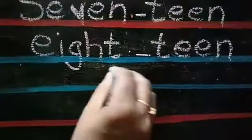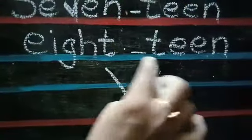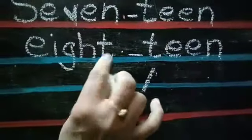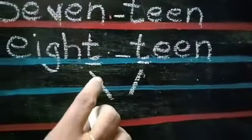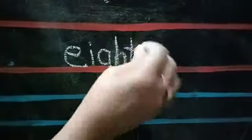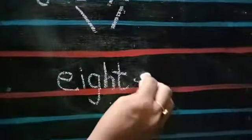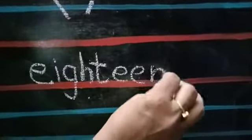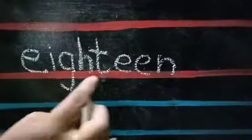Children, while writing eighteen spelling, be careful. There are two E's. Already, eight ends with T, and teen also starts with T. So you have to write only one T. Look at the board, children. Eighteen spelling: E-I-G-H-T. Write eight. Leave this T. Write only E-E-N. Because you have T already there — the T sound is already there in eight.